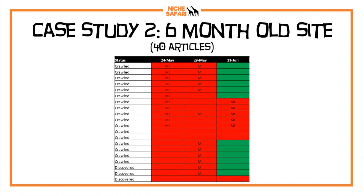Case study two is a six-month-old site with around 40 articles — a much harder one to get to stick in the index. I was going about once a week to try to manually index all these articles. Between the 24th and 29th of May, literally none of the articles were sticking. So I just kept coming back every week being persistent until one week all of a sudden they started to stick. If your site isn't sticking even with manual indexing, you just have to keep trying month on month until something starts happening.